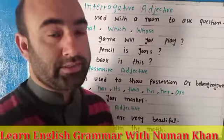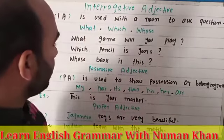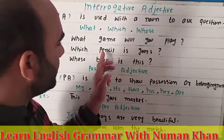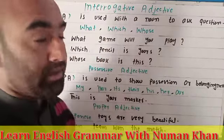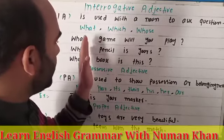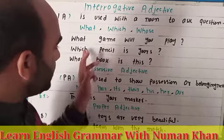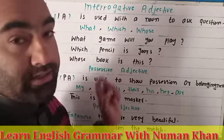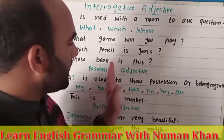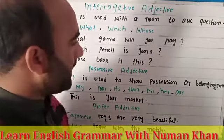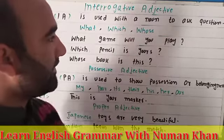Another example: 'Which pencil is yours?' Here, 'which' comes before the noun 'pencil' and modifies it. Similarly, 'Whose book is this?' — 'whose' comes before 'book.' The words what, which, and whose come before nouns like game, pencil, and book, modifying them. That is why they are called interrogative adjectives.